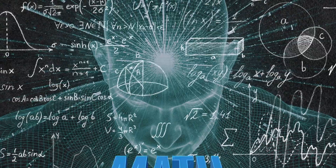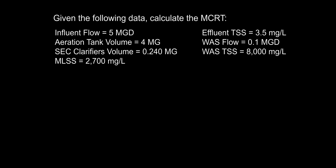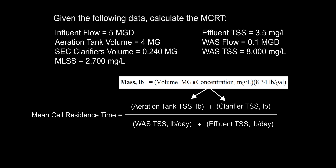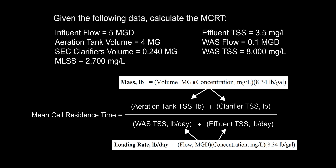The answer is D, 14 days. Grab something to write with, paper and a calculator, because it's time for a math breakdown. MCRT, or mean cell residence time, also known as sludge retention time, is the amount of time in days that solids or bacteria are maintained in the activated sludge process. This equation is one of the more intimidating formulas that an operator must know. However, when broken down, it really isn't anything special. The top half of this equation consists of two mass formulas added together, and the bottom half are two loading rate formulas added together. We'll solve each part within the MCRT formula by going from left to right and from top to bottom.